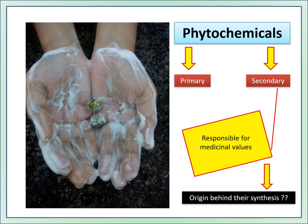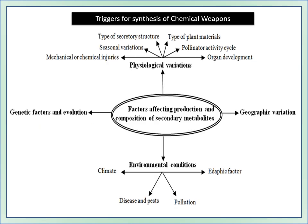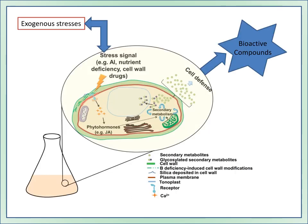Phytochemicals — primary and secondary — are responsible for medicinal values. Their origin is related to stress, both abiotic and biotic. Fungal secondary metabolites are a major source of medicinally important compounds such as penicillin and anti-cholesterol compounds like lovastatin. Stress is important — you can observe how compounds are synthesized as chemical weapons in response to exogenous stress and as the cell's defense mechanism.